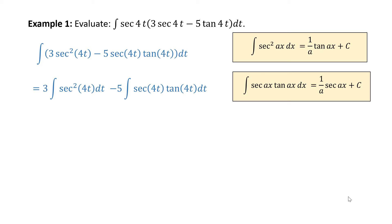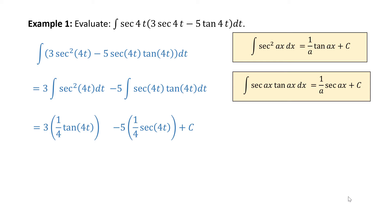Let's appropriately apply these rules. For the first one, 3 times the antiderivative of secant squared 4t dt is equal to 1 over 4 tangent 4t. For the second part, we use the second rule: minus 5 times 1 fourth secant 4t plus C. Don't forget the plus C. Let's do some of the arithmetic: 3 times 1 fourth gives us 3 fourths tangent 4t, minus 5 times 1 fourth gives minus 5 fourths secant 4t, plus C.